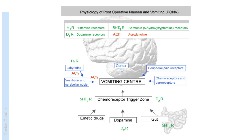The chemoreceptor trigger zone contains a number of receptors for specific neurotransmitters, and when stimulated, it feeds into the vomiting centre to cause nausea and vomiting. The receptors found in the zone include receptors for histamine, dopamine, serotonin or 5-HT3, and also drugs such as opioids and volatile anaesthetic agents. Understanding what and how the zone is activated is key to effectively managing post-operative nausea and vomiting, as this is where a lot of the commonly used antiemetics are targeted, and we will further explore this later in this presentation.